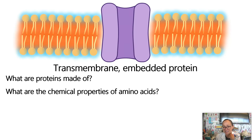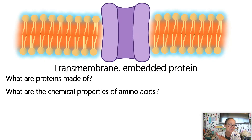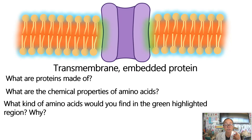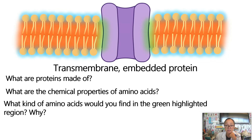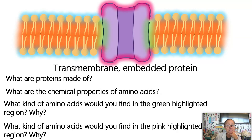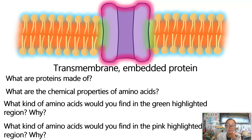Proteins are made out of amino acids, and amino acids can be polar, nonpolar, or ionic with a positive or negative charge. In the green highlighted nonpolar region of the membrane, we would expect nonpolar amino acids in that part of the protein. In the pink area that interacts with the watery aqueous environment — both inside and outside the cell — we would expect polar or ionic amino acids that are happy to interact with the water.